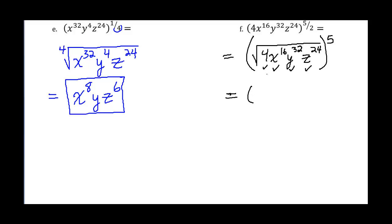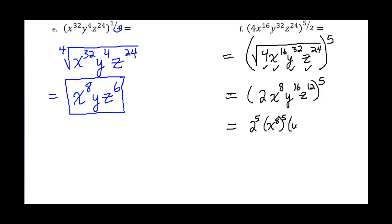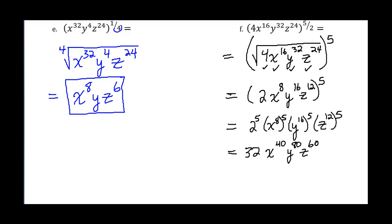Working inside the parentheses: 4 is a perfect square, so the square root of 4 is 2. Dividing 16 by 2 gives 8, so the square root of x to the 16th is x to the 8th. We get y to the 16th and z to the 12th. Everything is still raised to the 5th power. Raising each factor to the 5th: 2 to the 5th is 32, x to the 8th to the 5th is x to the 40th, y to the 16th to the 5th is y to the 80th, and z to the 12th to the 5th is z to the 60th.